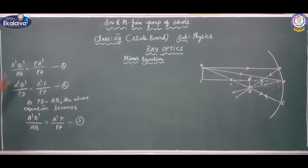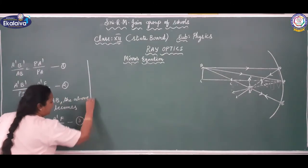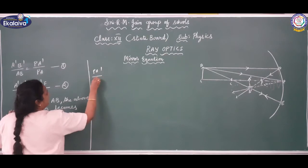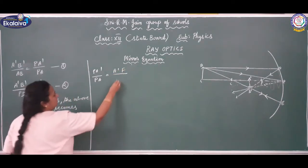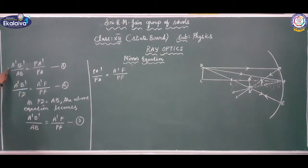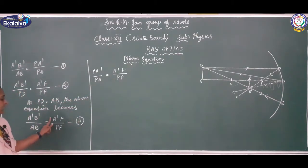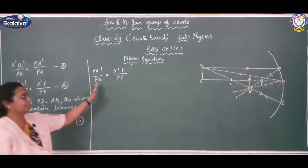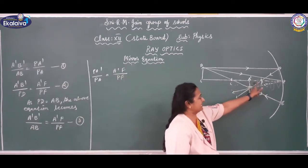Equations 1 and 3 have similar terms on the left side, so comparing them: PA' / PA = A'F / PF. Now, from the diagram, A'F is the distance between the principal focus and the image, which can be written as A'F = PA' − PF.